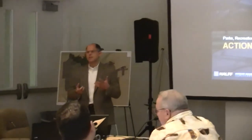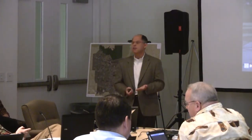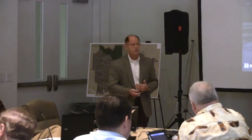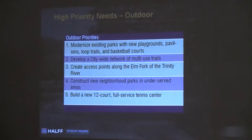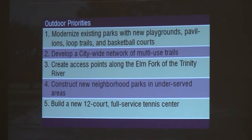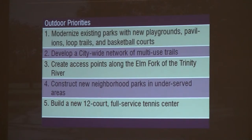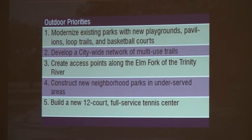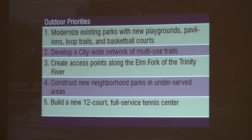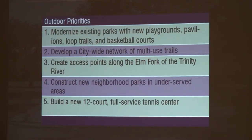The combination of recommendations truly is the action plan — it tells you what actions are needed to achieve the vision you have for the city. For outdoor priorities: modernize your existing parks with new playgrounds, pavilions, and new trails. Follow through with your trails master plan to get the network of trails throughout the city. Create access points along the Elm Fork of the Trinity River as part of the paddle trail — make it more visible and accessible to people, even just to walk along or view the beauty of that tremendous resource. New neighborhood parks need to be constructed in underserved areas, and then the full-service tennis court — a 12-court facility with a pro shop, restrooms, et cetera.